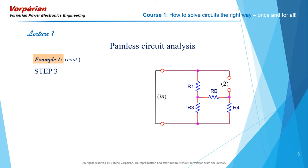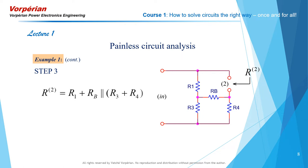Step 3: Determine the resistance looking back into the network from port 2 with the input port open. This we can easily write by inspection again. It is R1 in series with the parallel combination of Rb and R3, plus R3 plus R4. And we're done with our three independent calculations. Next, we are going to substitute each of these into the structure of the extra element theorem to obtain the complete answer for the input resistance Rn.